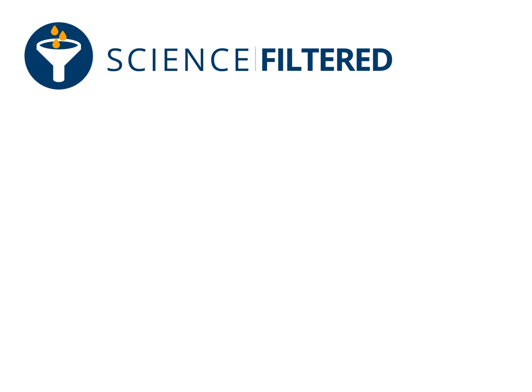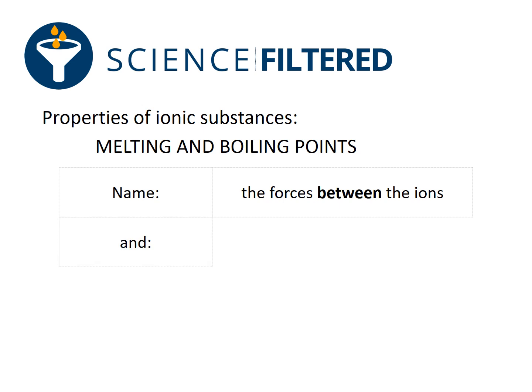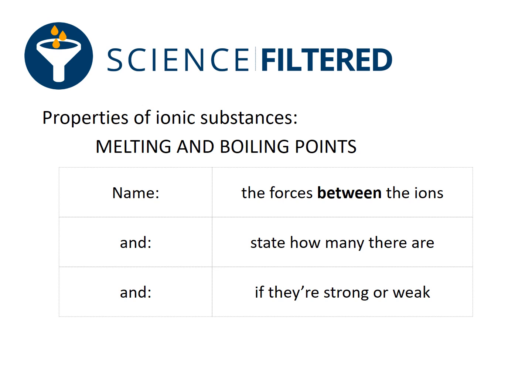We are going to have a look at some specific properties of ionic compounds — in particular, melting and boiling points. When answering this question, I need to name the forces between the ions, think about how many there are, and also consider whether they are strong or weak.